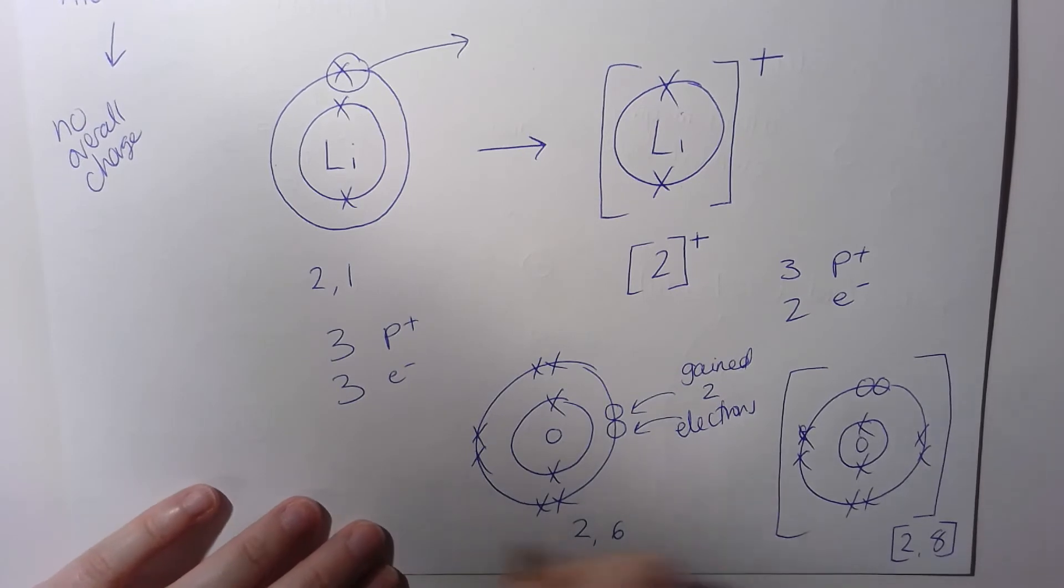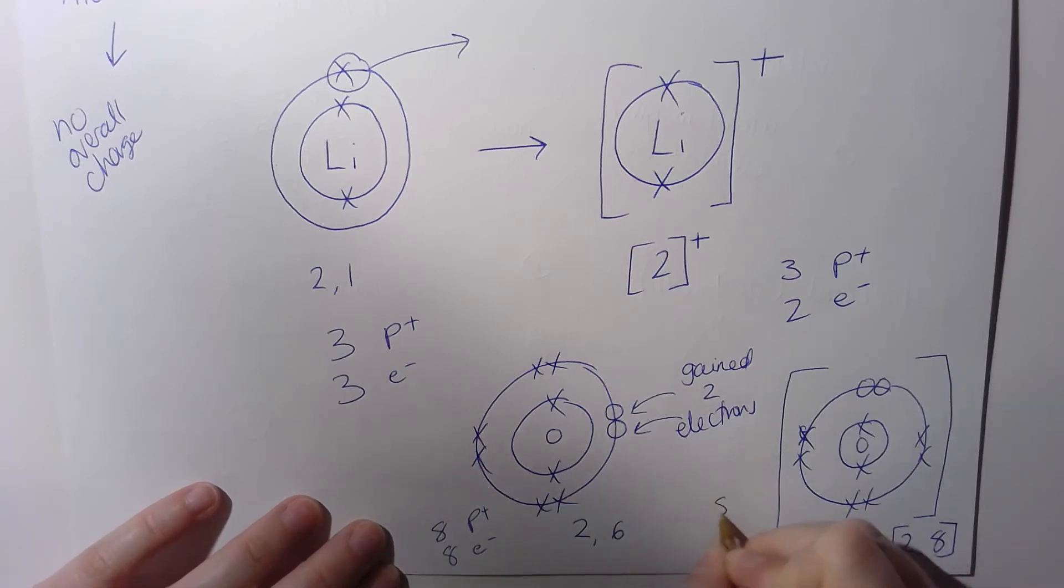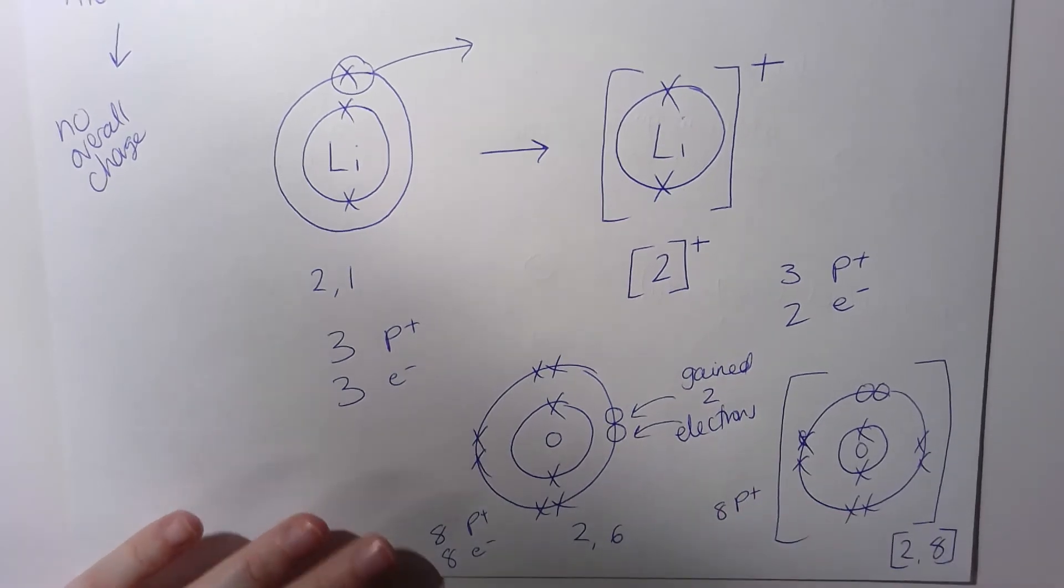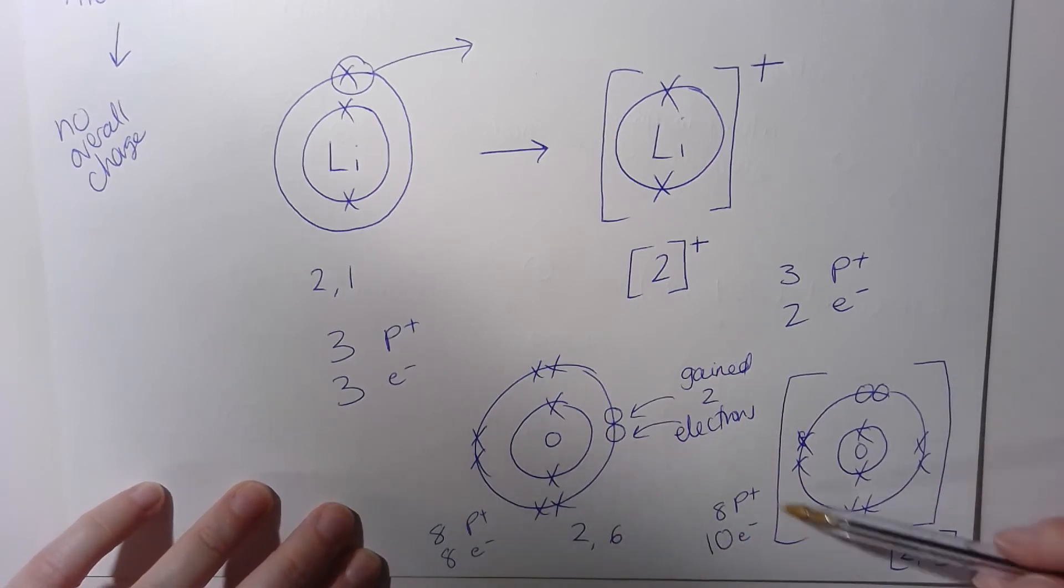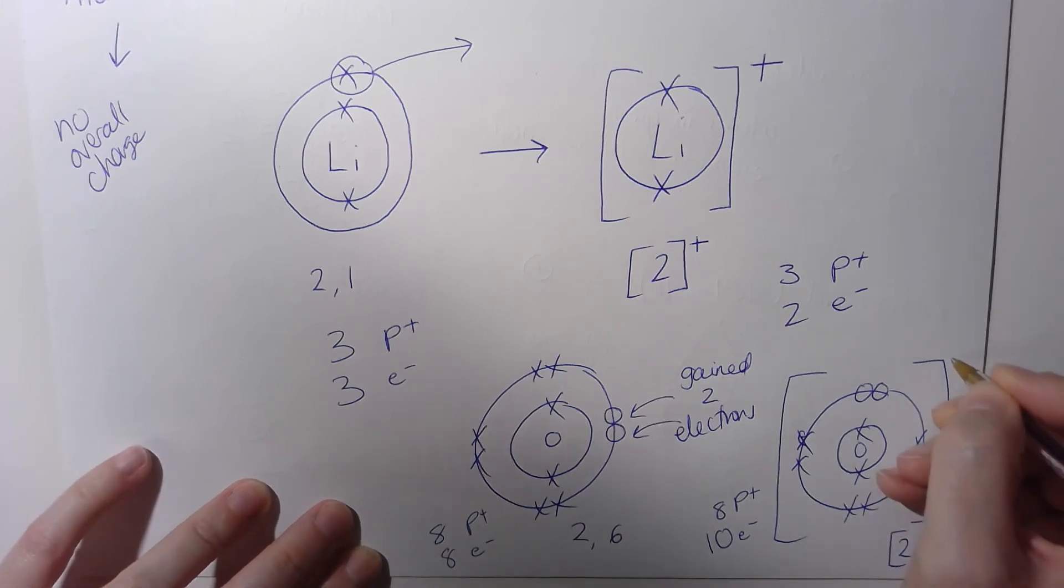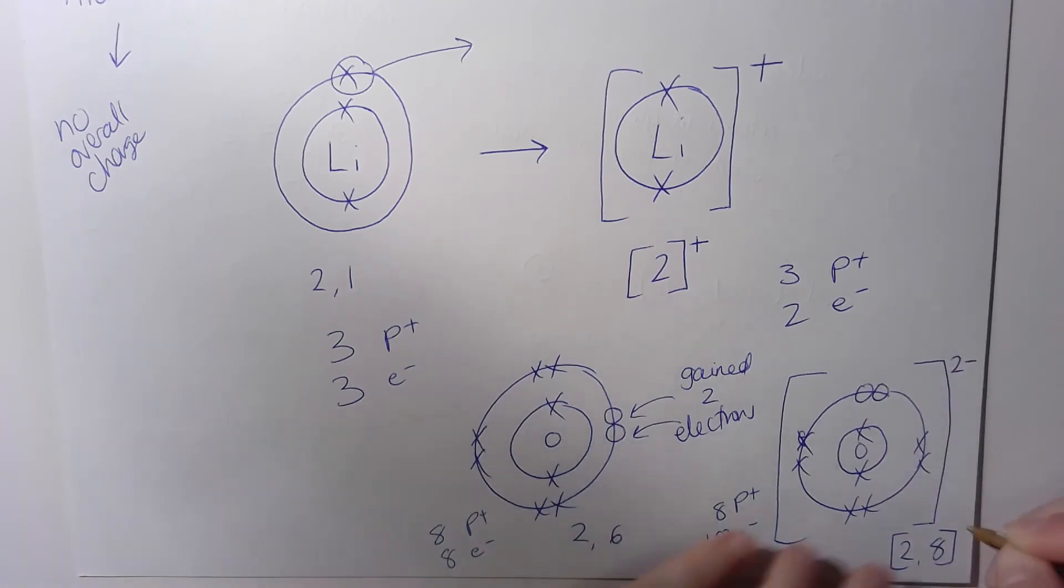Here we had eight protons and eight electrons. On this side we still have our eight protons, remember because they're not going to change, but we've gained two more electrons, meaning our charges now we've got two more negatives than we have positives. So this becomes a two negative charge ion.